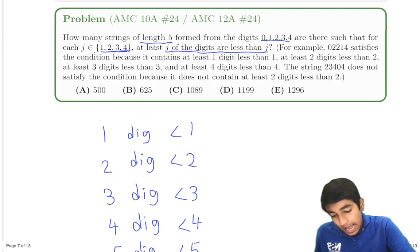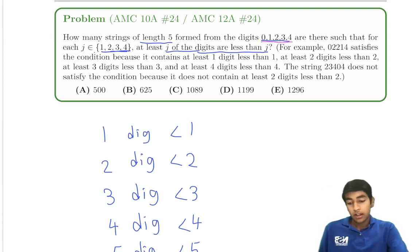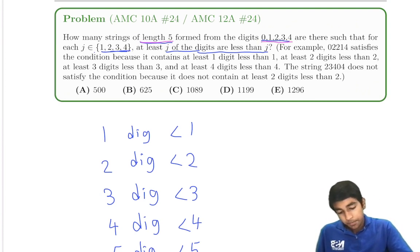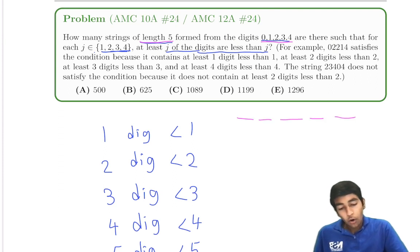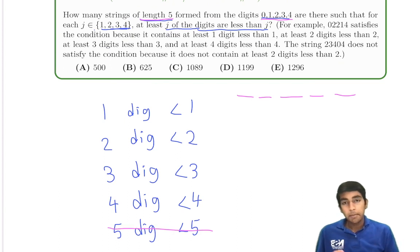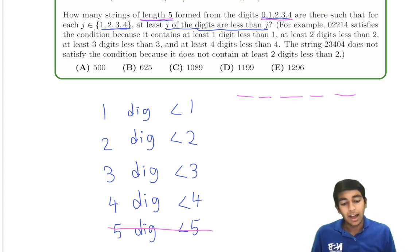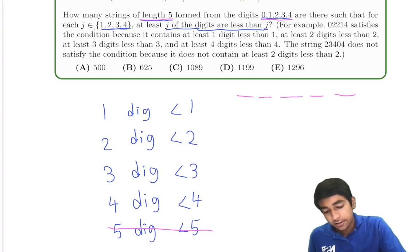Notice that the strings are of length 5 and formed from digits 0 through 4. So the last condition — 5 digits less than 5 — is redundant, because all digits are already from 0 through 4, meaning all five digits are already less than 5.